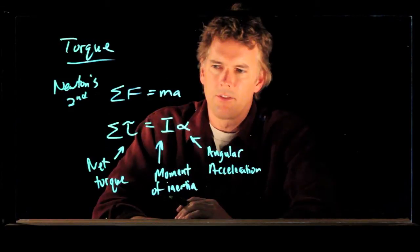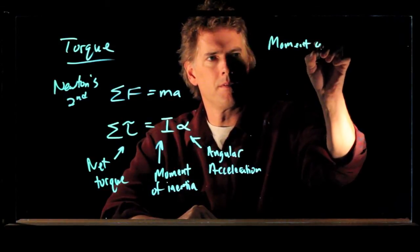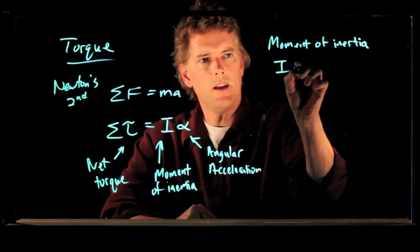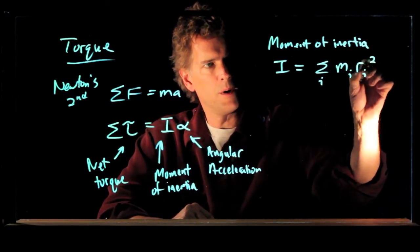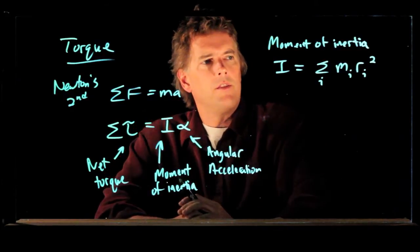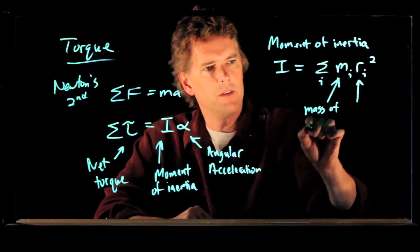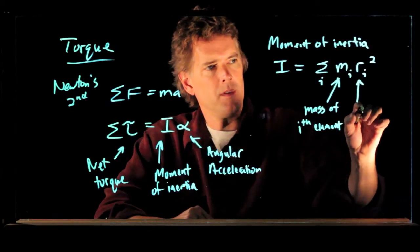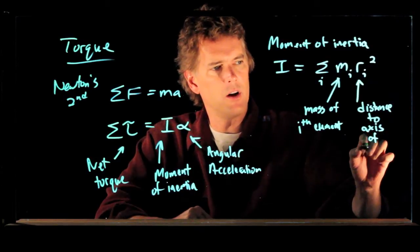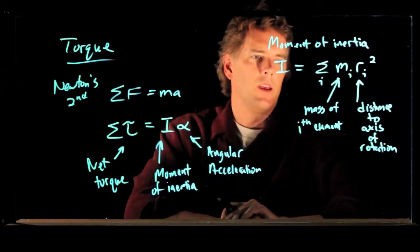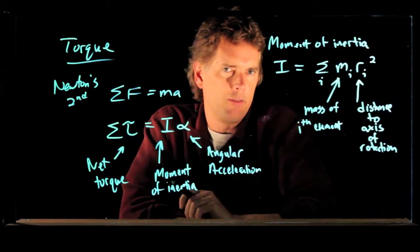So let's talk about this moment of inertia. What is I? I is defined as the summation of m sub i r sub i squared. And this is the mass of the ith element. R is the distance from that element to the axis of rotation. And so when you calculate I for an object, you have to sum up all the objects and figure out how far they are from the axis of rotation.